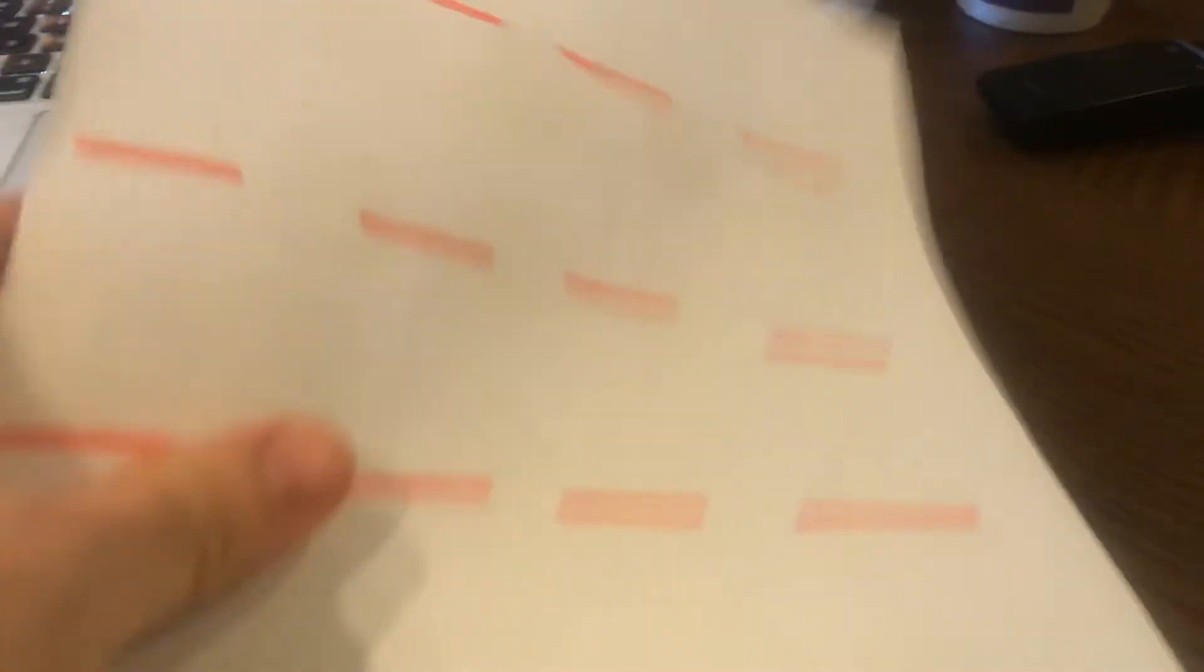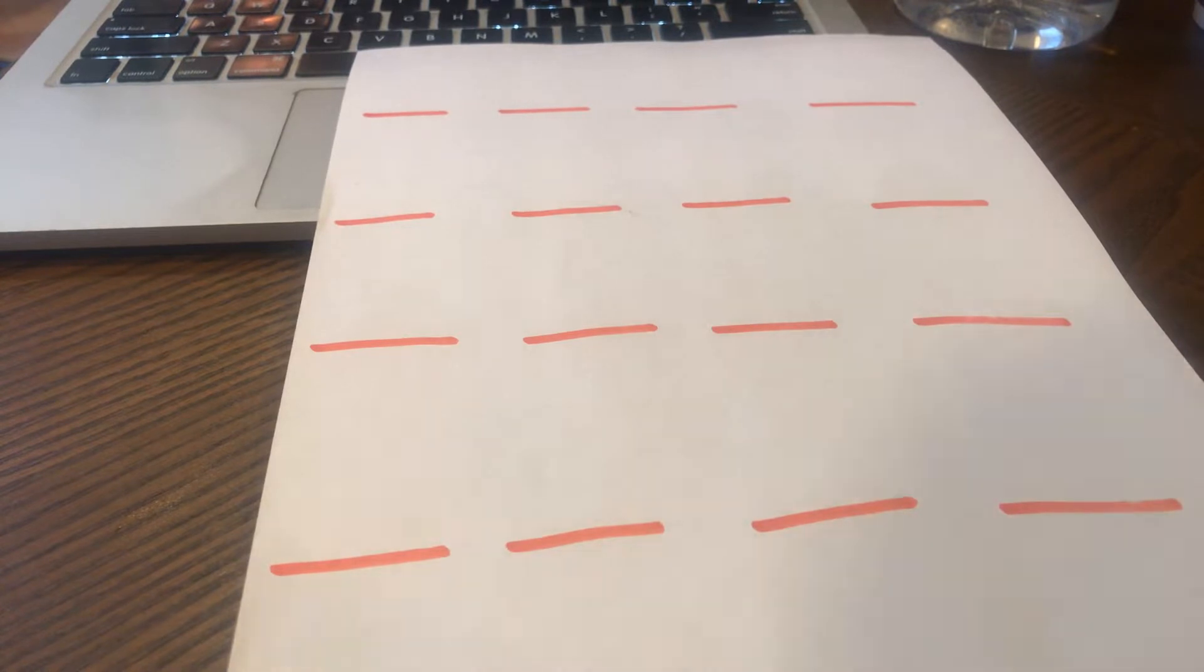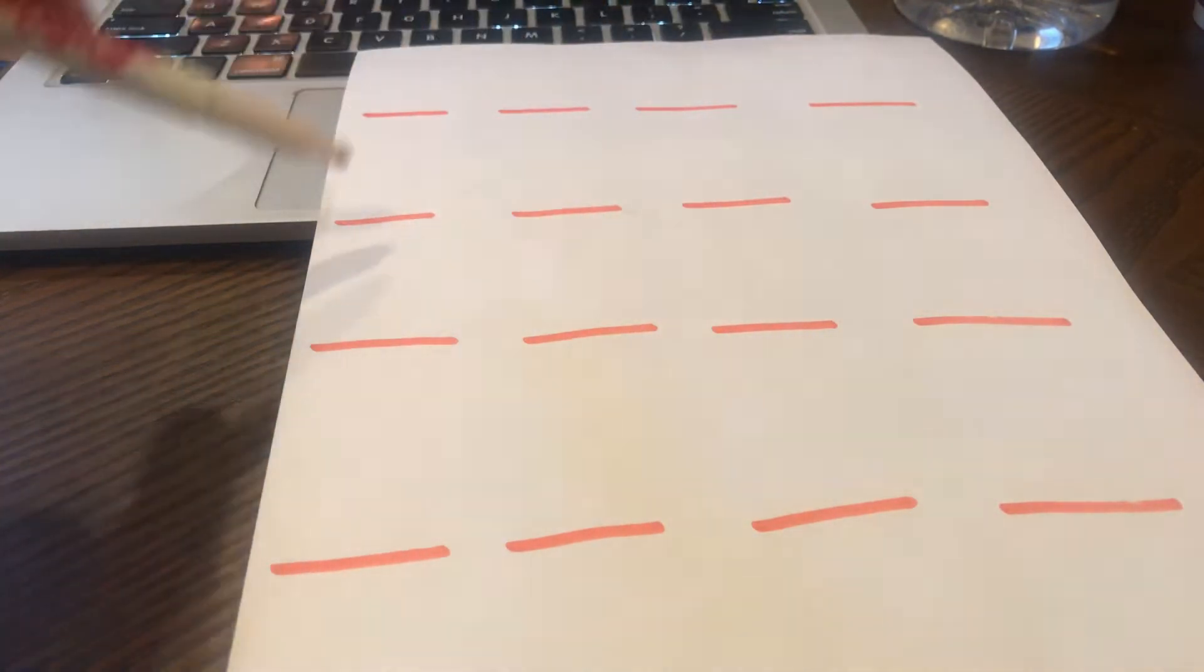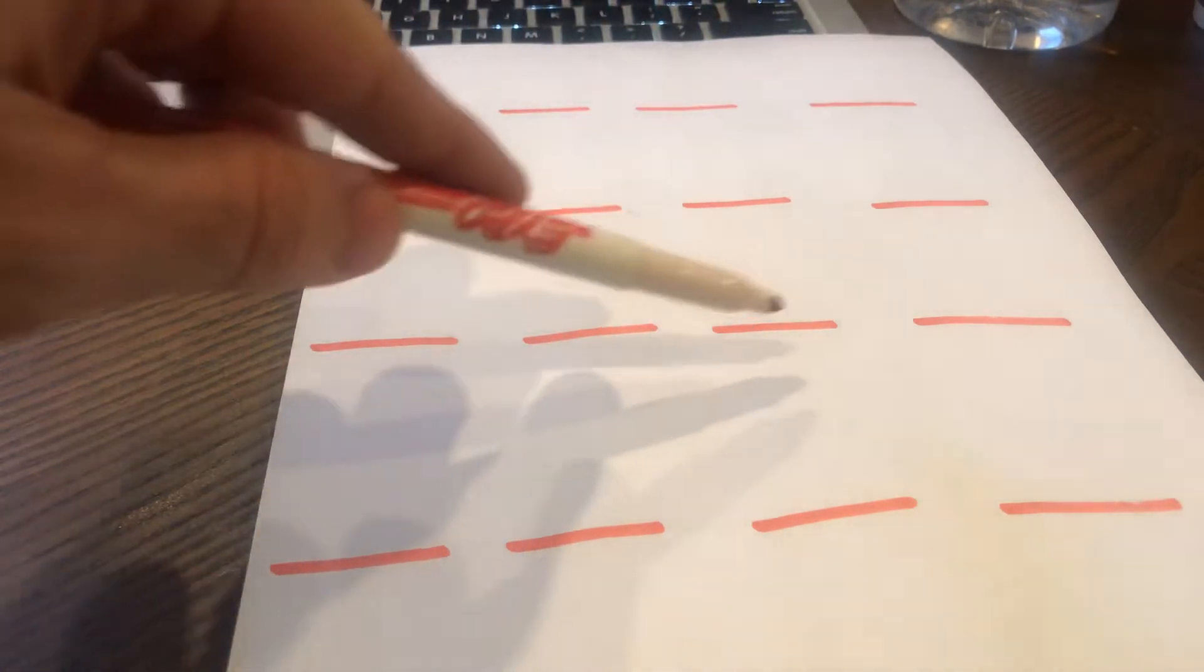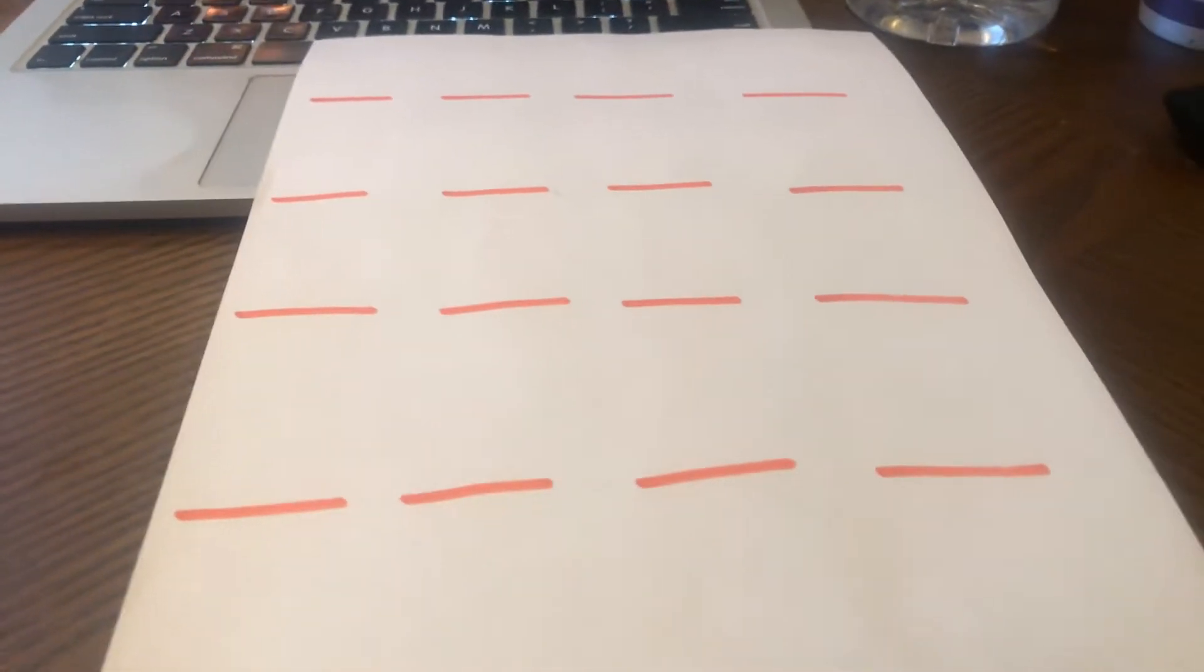What I have over here is a template. You can see on the template I've got 16 beat marks. Let's count them: 1, 2, 3, 4, 5, 6, 7, 8, 9, 10, 11, 12, 13, 14, 15, 16. Okay, 16 beat marks.